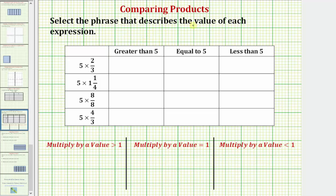We're asked to select a phrase that describes the value of each expression. Notice each expression is a product of five and some value. We're asked to describe the product as being greater than five, equal to five, or less than five. We should not have to find each product in order to describe the product.